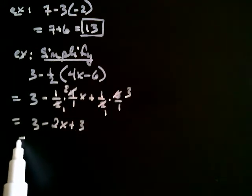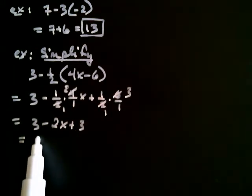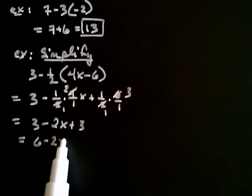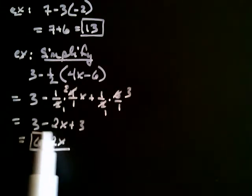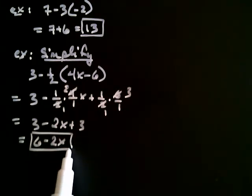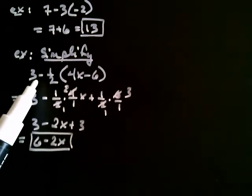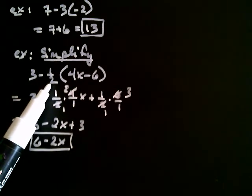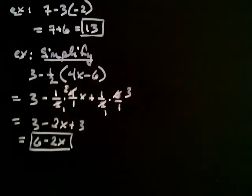Finally, I combine like terms and I get 6 minus 2x. This was easy when I thought of the negatives belonging to the 1 half and this negative belonging to the 6.